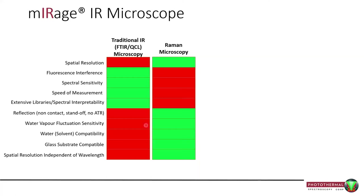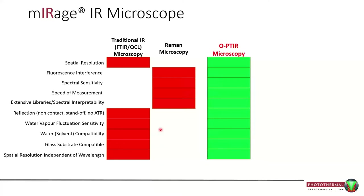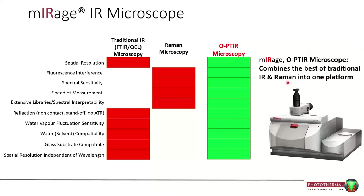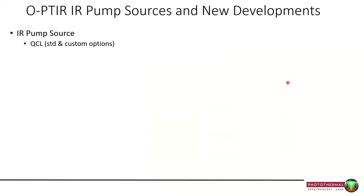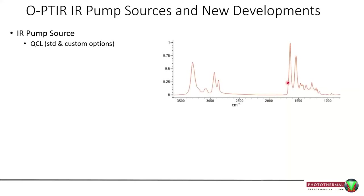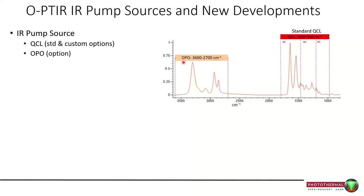What we do with OPTIR is take all of those attributes and literally put them into one instrument. When I say it combines the best of both traditional IR and Raman into a single platform, I actually mean that quite literally. At the heart of this is the infrared light source — the QCL. There have been some developments over the last year or so. The traditional standard QCL covers 1800 to 950 wavenumbers done with three chips — three mini lasers within one box. If you're interested in higher wavenumber areas, you can opt for an additional OPO laser covering 3600 to 2700.